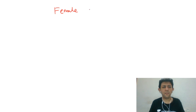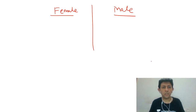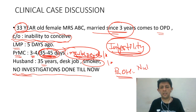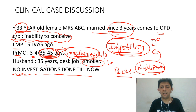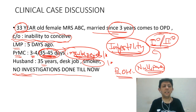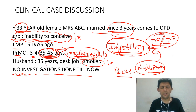We must divide the approach systematically into what we do for the female partner and what we do for the male partner. In history, we should ask whether the patient has ever conceived before. If she has never conceived, it is primary infertility. If she had conceived before — through MTP, spontaneous miscarriage, or abortion — it becomes secondary infertility. In this case, it appears to be primary infertility.